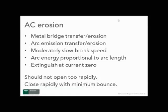Next is arc emission transfer, which is always from minus to positive, but in AC circuits that moves back and forth at 60 cycles per second. So the net erosion can be in either direction, and generally again from the hotter to the cooler contact.